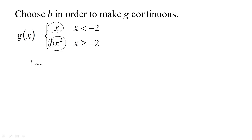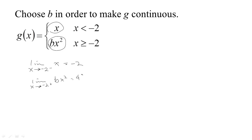If we look at the limit as x tends to negative 2 from below, we're getting negative 2. But if we look at the limit as x tends to negative 2 from above, then we're getting 4b.